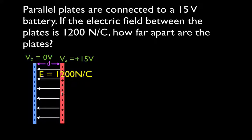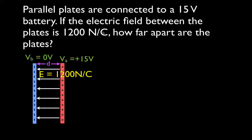That tells us that the potential difference between these two plates is 15 volts. We have one plate at plus 15 volts and another plate — the negative plate — at zero volts. We're also told that there's an electric field between the plates of 1200 newtons per coulomb.